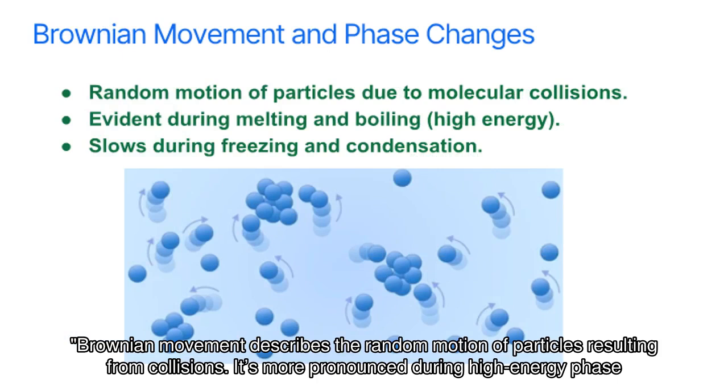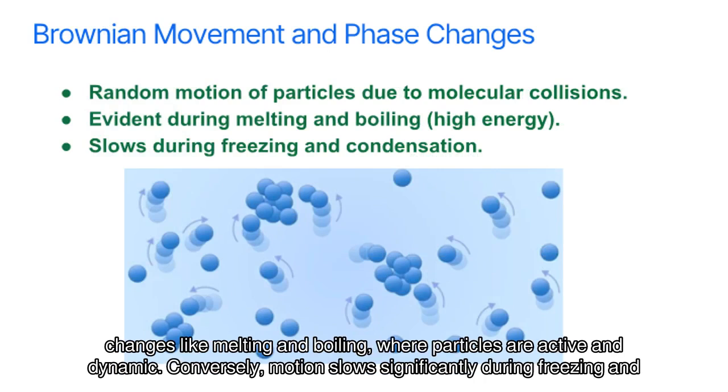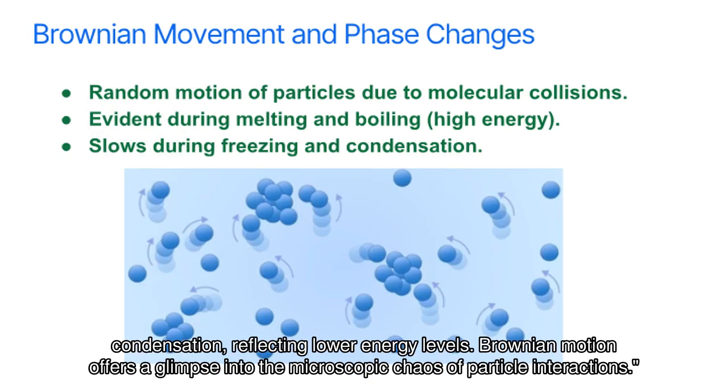Brownian movement describes the random motion of particles resulting from collisions. It's more pronounced during high-energy phase changes like melting and boiling, where particles are more active and dynamic. Conversely, motion slows significantly during freezing and condensation, reflecting lower energy levels. Brownian motion offers a glimpse into the microscopic chaos of particle interactions.